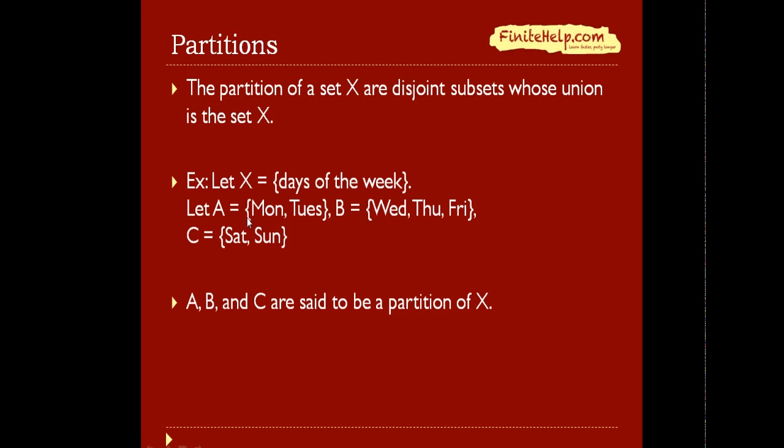And notice the second thing is that when you put A, B, and C together, the union of them, you can see that that includes Monday, Tuesday, Wednesday, Thursday, Friday, Saturday, and Sunday, which put together to be the days of the week. So therefore, A, B, and C are said to be a partition of X.